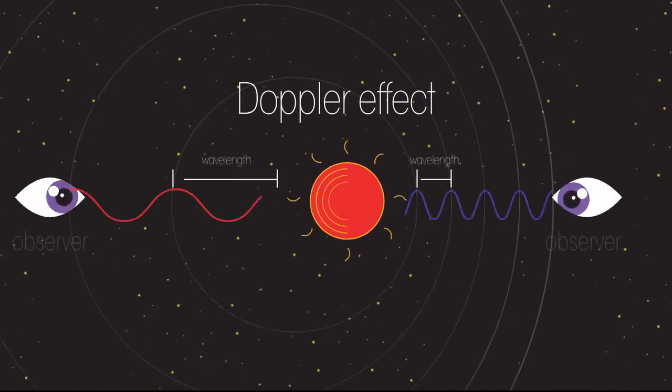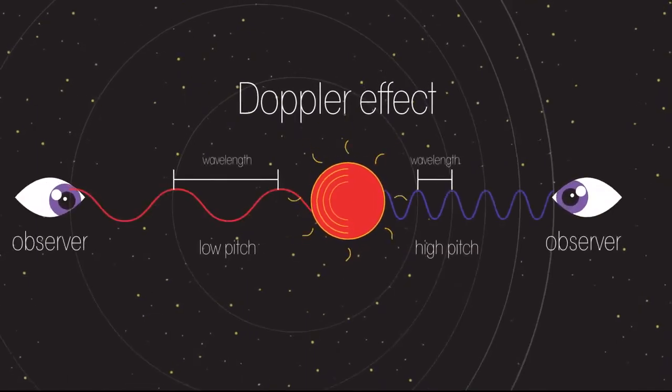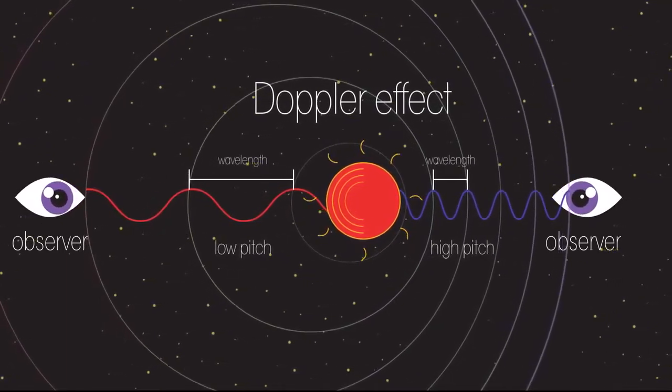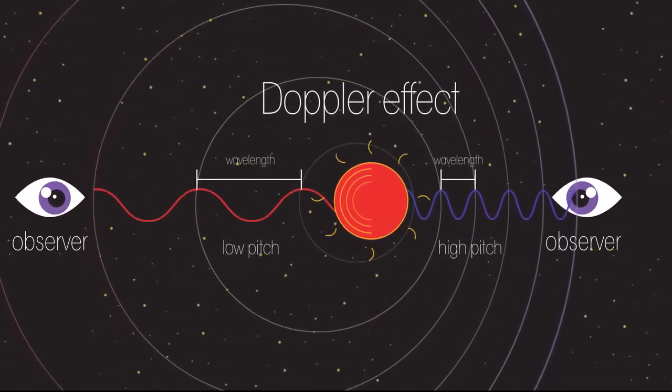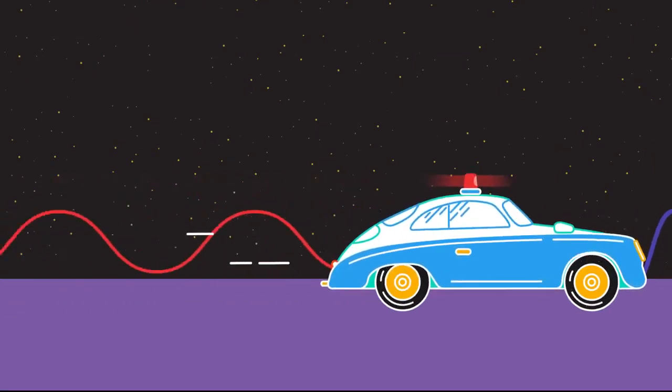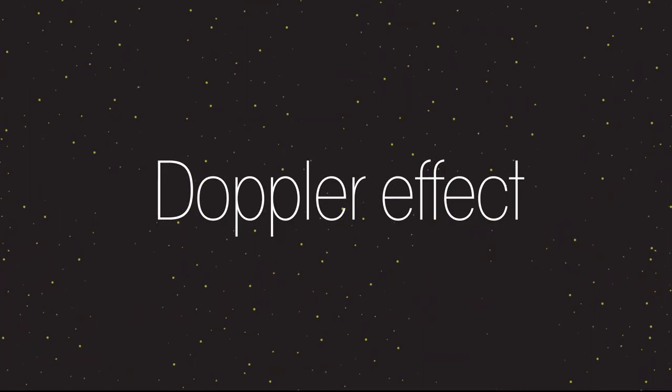The Doppler effect is the observed change in wavelength and pitch of sound or change in wavelength and color in light if the source is moving relative to the observer. Have you ever heard a police car pass and noticed the sound of the siren change suddenly? Then you have experienced the Doppler effect.